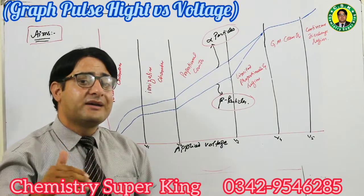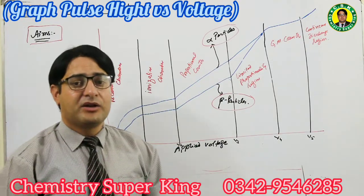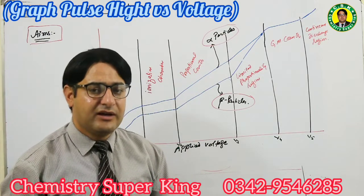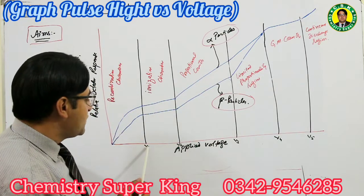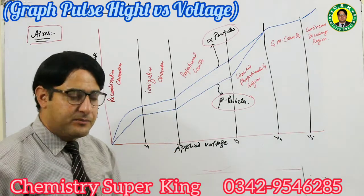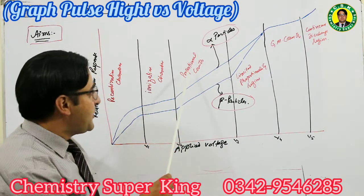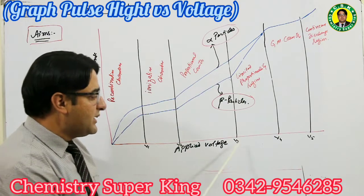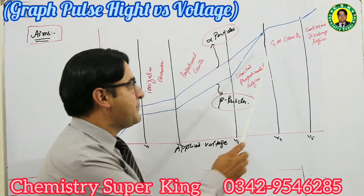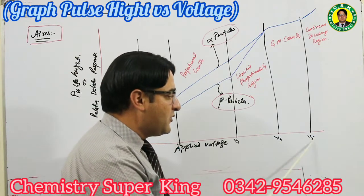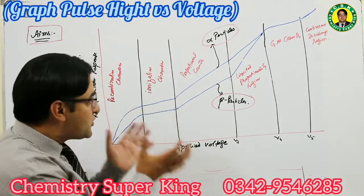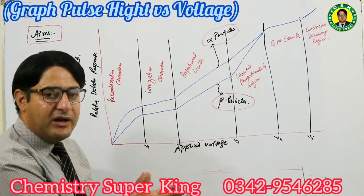In summary, the three main types of gas detectors are: the ionization chamber, operating in the V1 to V2 voltage region; the proportional counter, operating in the V2 to V3 voltage range; and the GM counter, operating in the V4 to V5 voltage range. This was the important graph of the gas ionization detector.